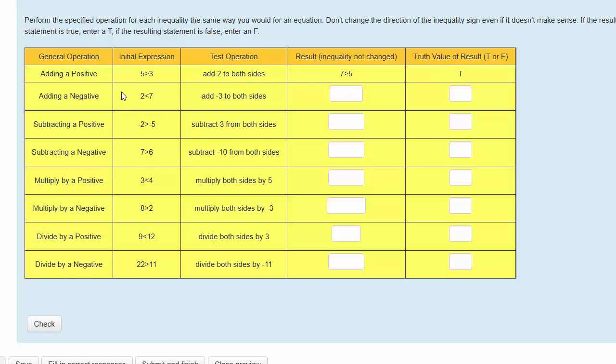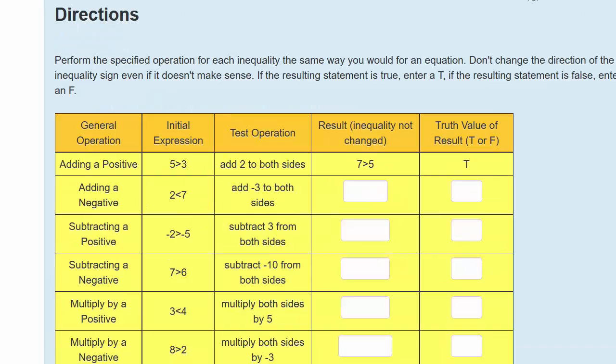The purpose of this investigation is to examine how algebraic operations affect the truth value of inequalities. For example, if I have the expression 5 is greater than 3, I'm wondering if adding a positive to both sides will keep the truth value of the inequality true.